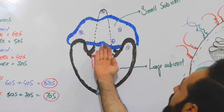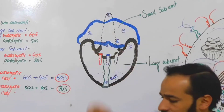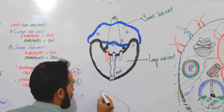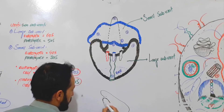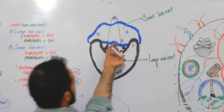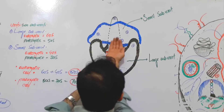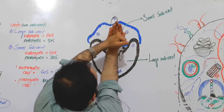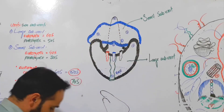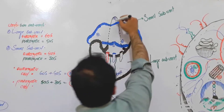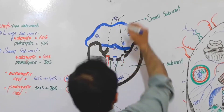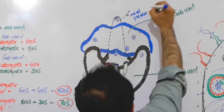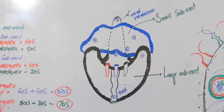The second part: the large sub-unit, posterior to the small sub-unit, has made a protuberance like this — it has extended posterior to the small sub-unit. This second part is called the central protuberance, and it is a part of the large sub-unit.